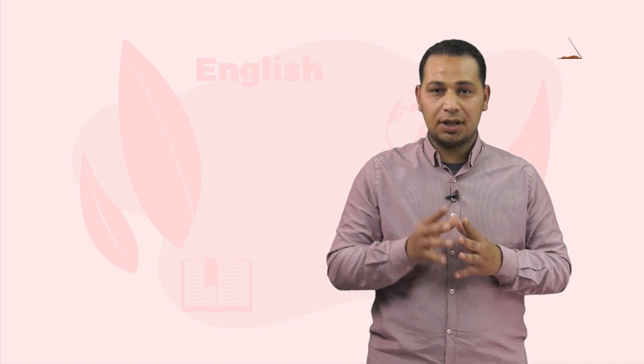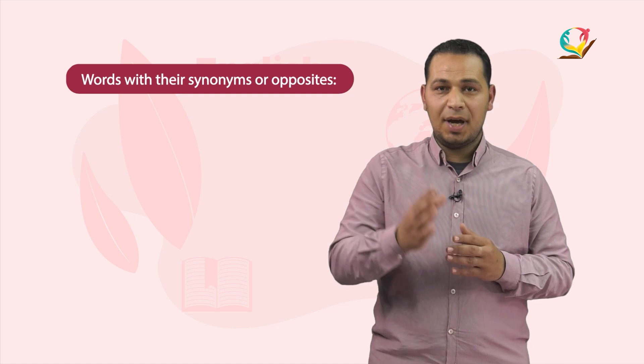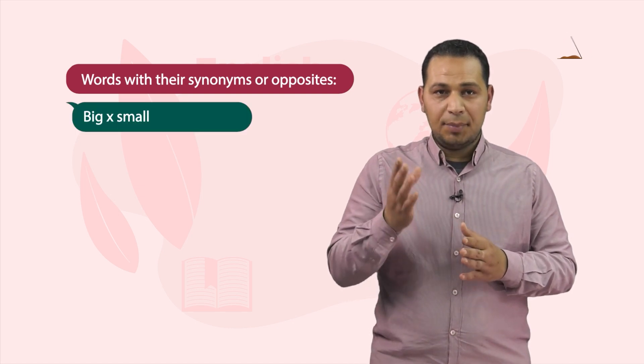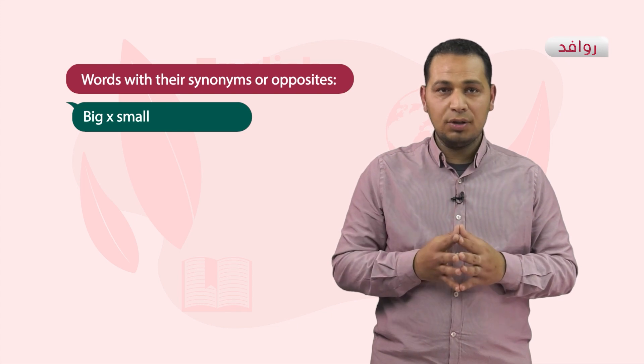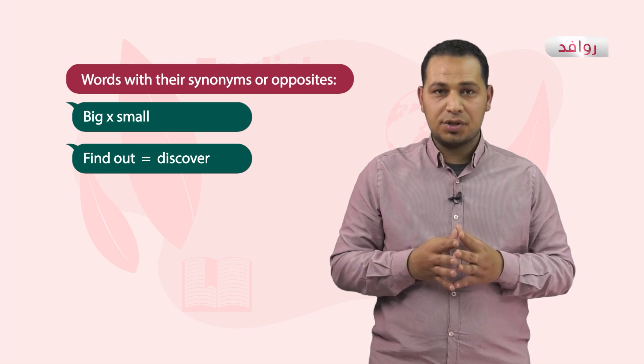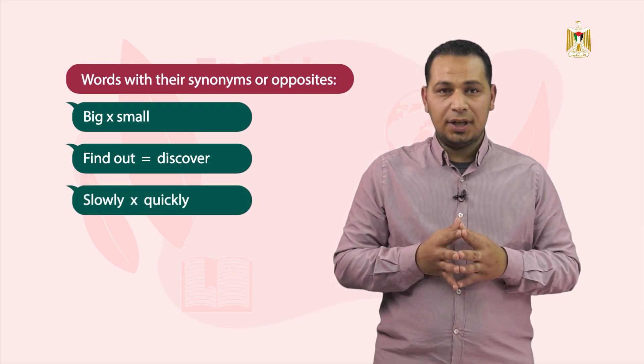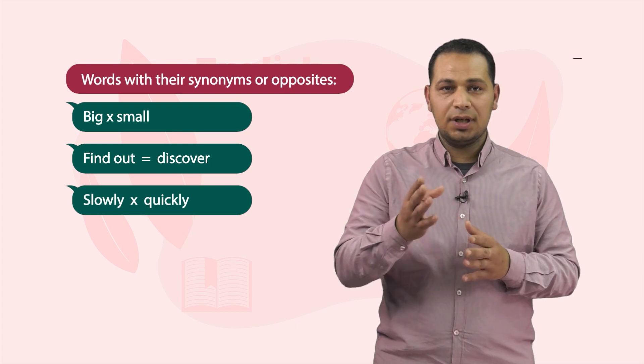There are some important words inside the text that we should know. Look at the screen to write them down in your notebook. Words with their synonyms or opposites: big (كبير), opposite small (صغير). Find out (يكتشف) equals discover. Slowly (ببطء), opposite quickly (بسرعة). Faster (أسرع), slower (أبطأ).